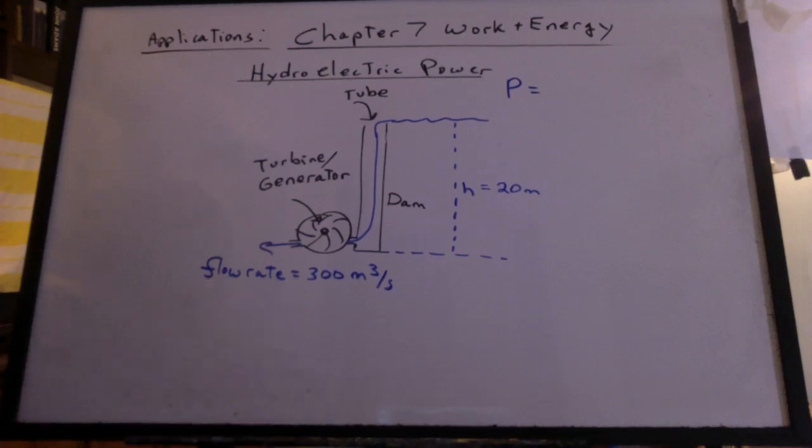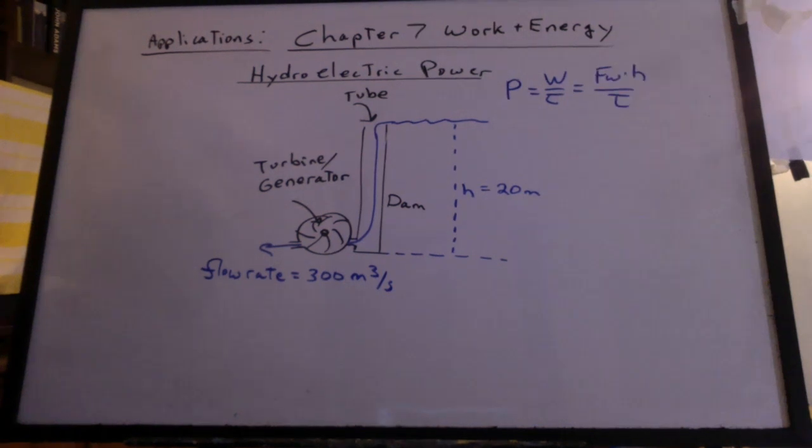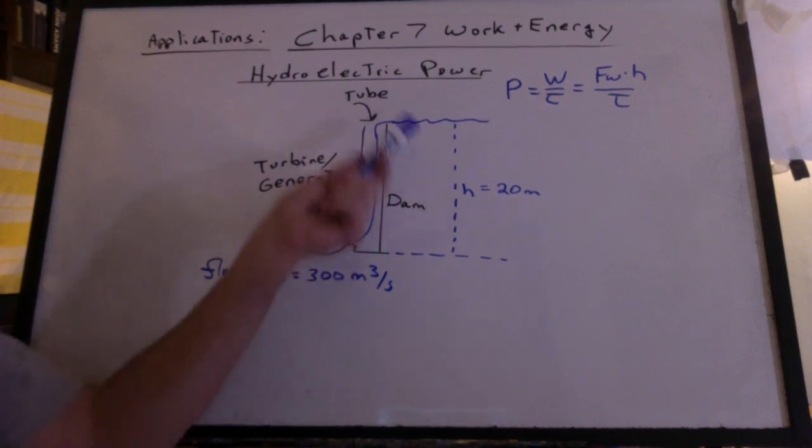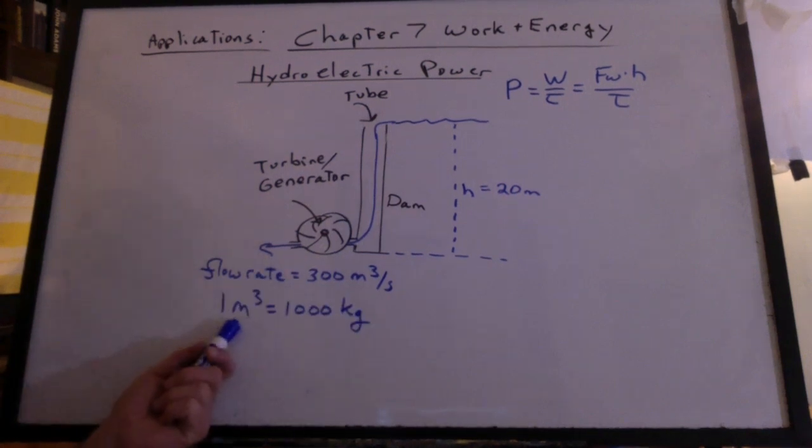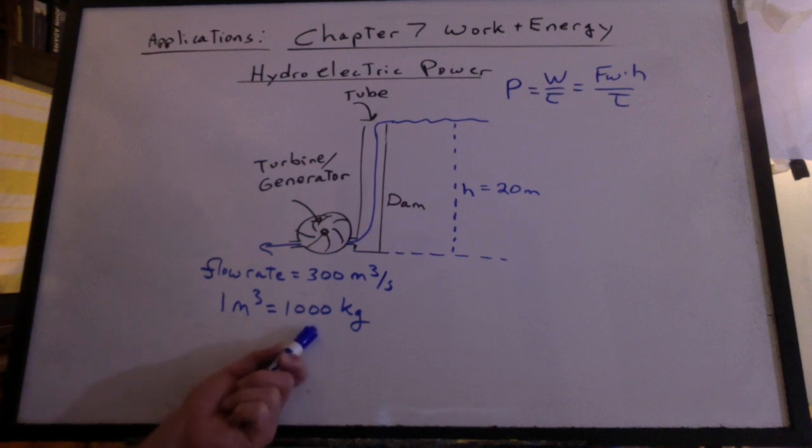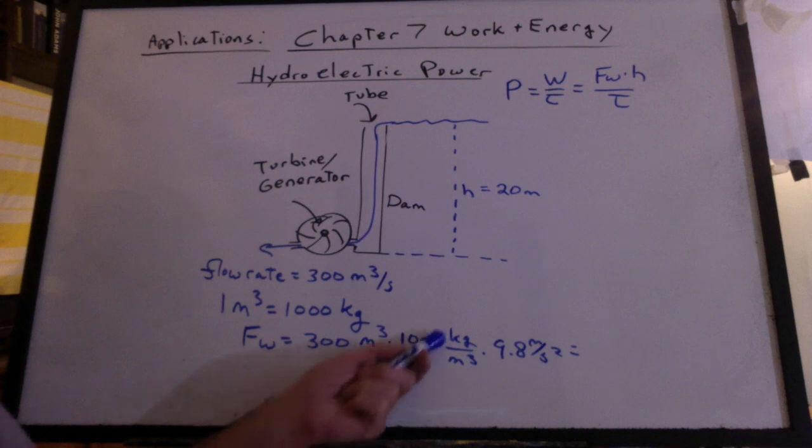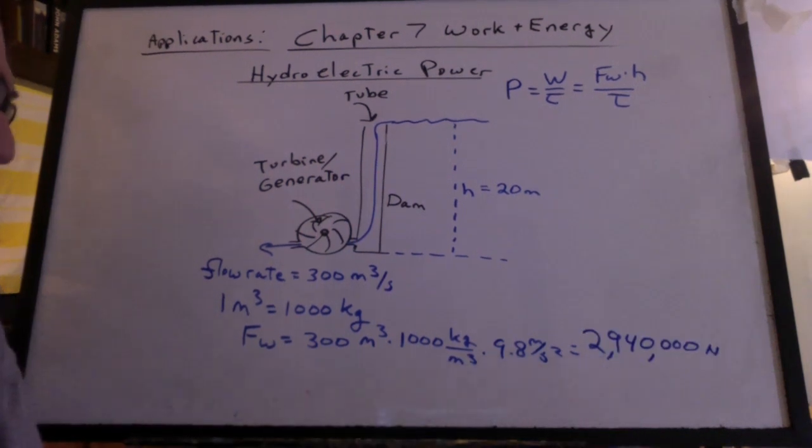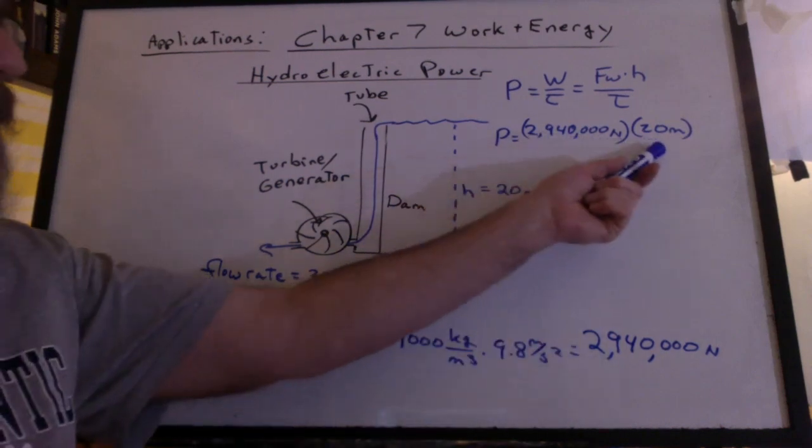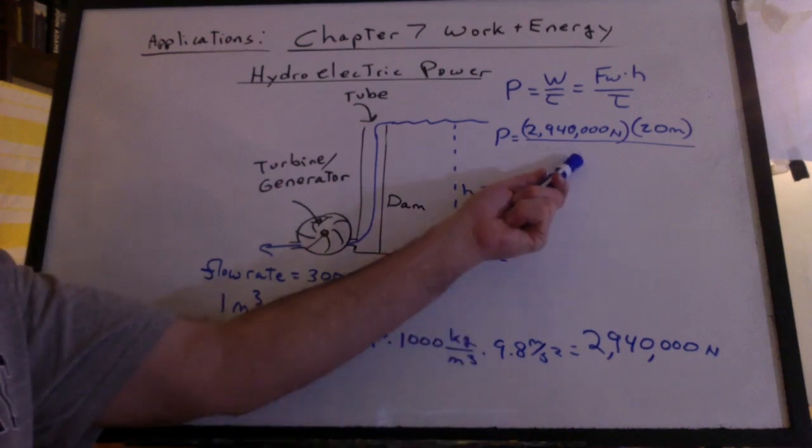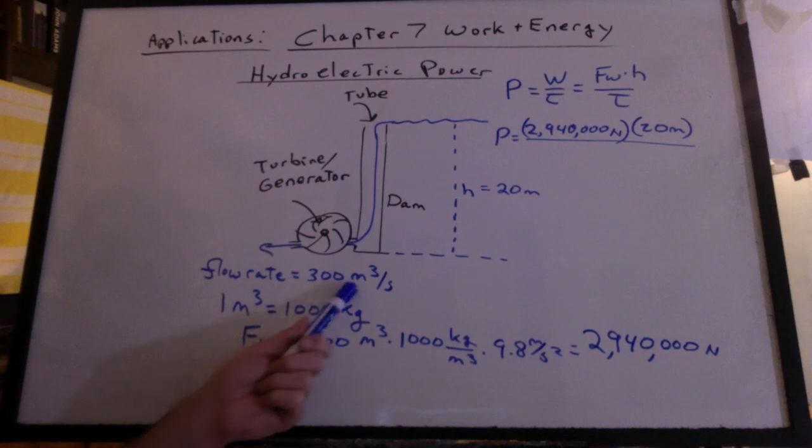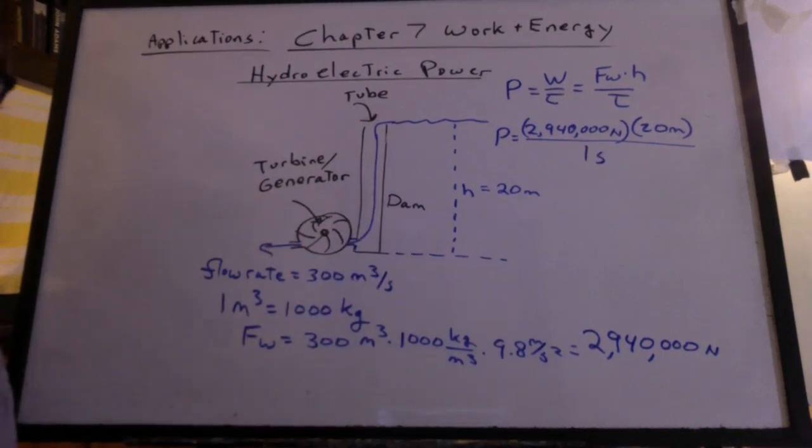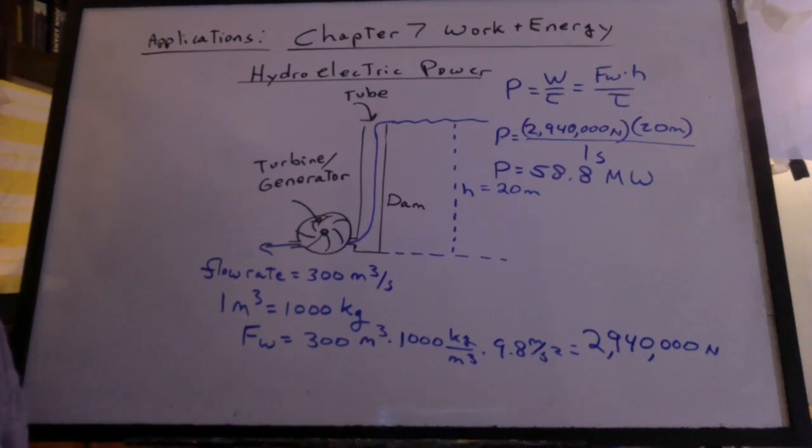How much power could this generate? We need work over time. It's the weight times the height in a problem like this. This is the reverse of us running up the stairs. Now the water is coming down. Gravity is what's supplying the power. To get the weight, we need to know that one cubic meter of water equals 1,000 kilograms. So we can take 300 cubic meters times 1,000 kilograms per cubic meter times 9.8 meters per second squared, and we get 2,940,000 newtons. Take this weight, multiply by 20 meters, and the flow rate is given at 300 cubic meters per second. It takes one second for this much weight to push through that generator. So we just put in one second, and that's 58.8 megawatts.